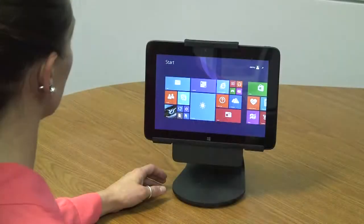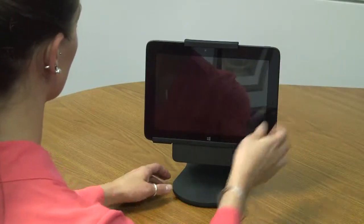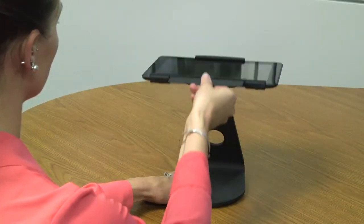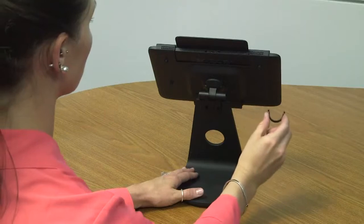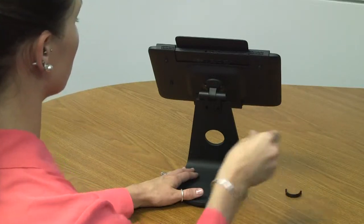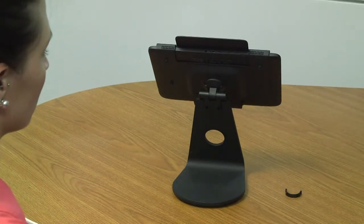First, power off the tablet. Tilt the stand upwards so you can easily access the micro-USB port and the power connector at the bottom of the tablet. Remove the cable clip from the stand and set it aside for later use.